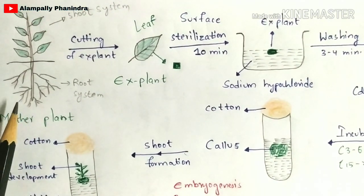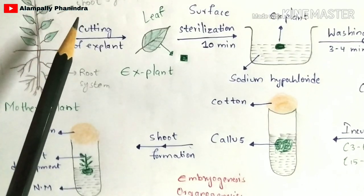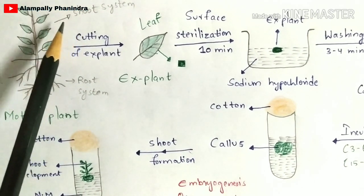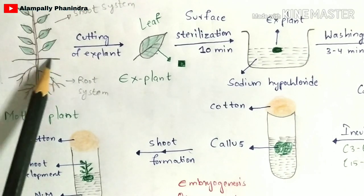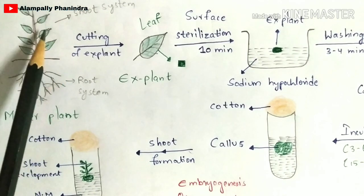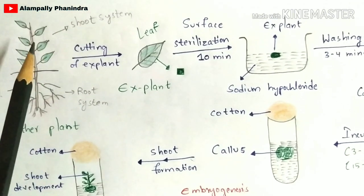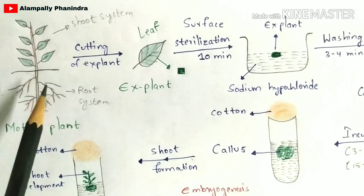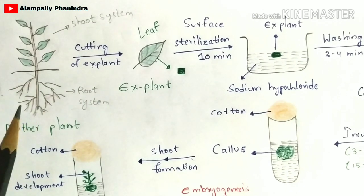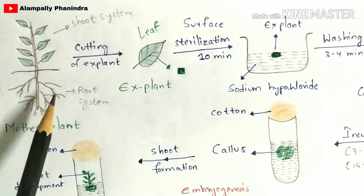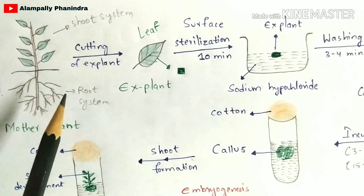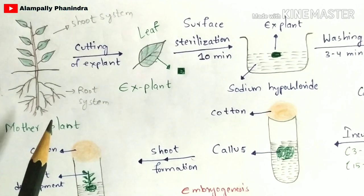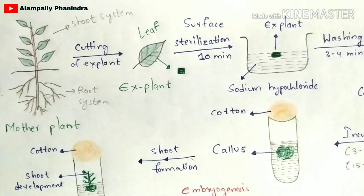You have to select a mother plant and make sure that it is well developed — meaning the root system as well as the shoot system should be well developed. The shoot system is the region present above the soil, which includes leaves, stem, flowers, and fruits. The root system is present below the soil. That perfectly developed plant is called the mother plant.